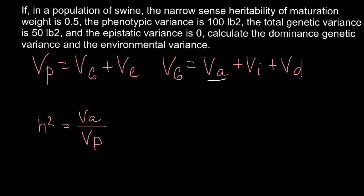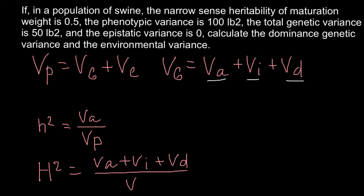For the broad or wide sense heritability, we need all three variances. The formula is H² (capital H squared) = (Variance additive + Variance epistatic + Variance dominance) divided by Variance total. This is the key difference between narrow sense heritability and broad sense heritability — narrow sense uses only Variance additive, while broad sense uses all three genetic variances.